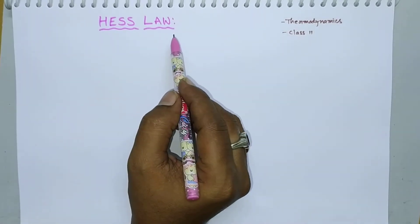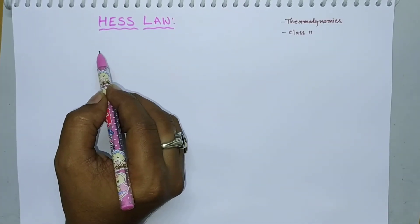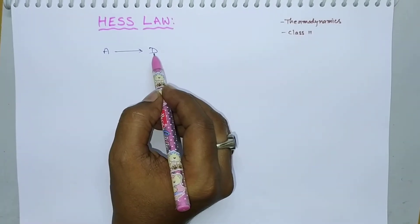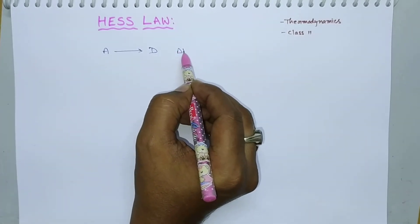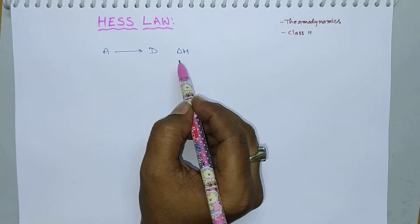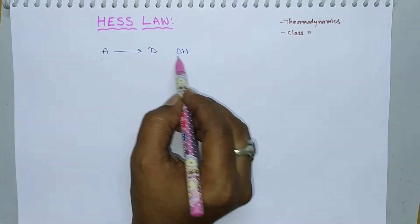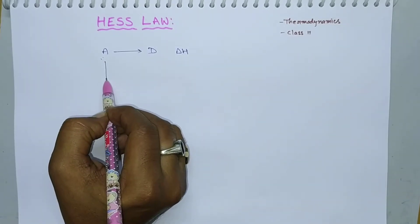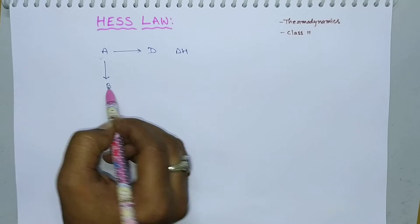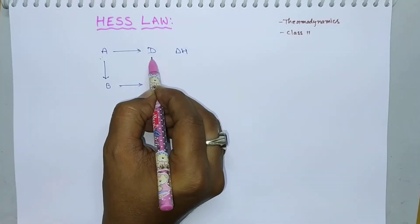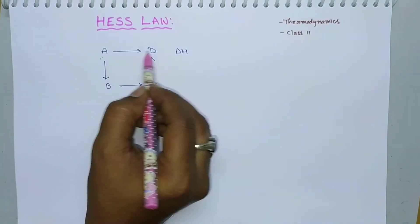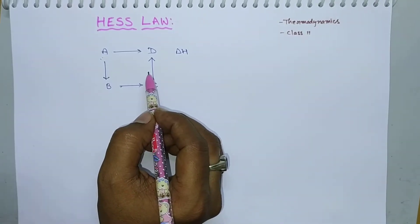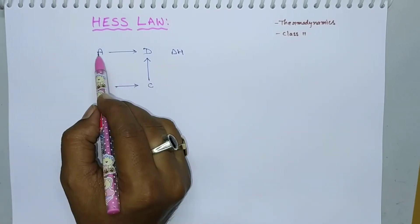To understand Hess's Law, let us consider a hypothetical conversion of reaction A to D. During this process, the enthalpy change will be delta H. This conversion of A to D can take place directly or indirectly. Indirectly, the process goes from A to B, B is converted to C, and C is converted to D. The direct route is a single-step process; the indirect route is a three-step process.